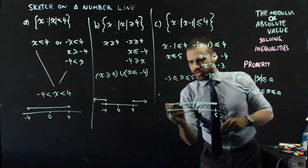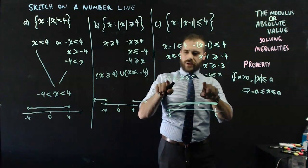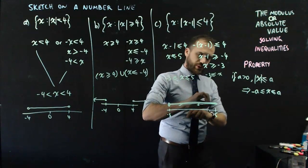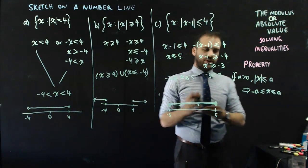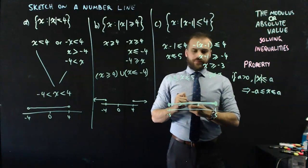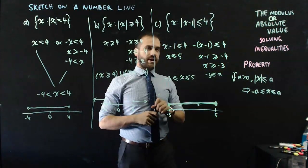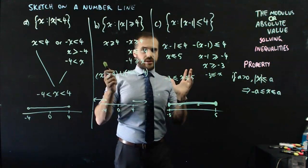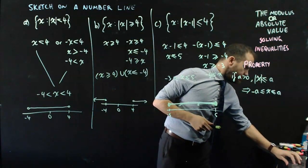And we get one single line, less than or equal to closed dot, less than or equal to closed dot there. Okay, I think that's about it. That is solving inequalities with absolute values on a number line. There you go.